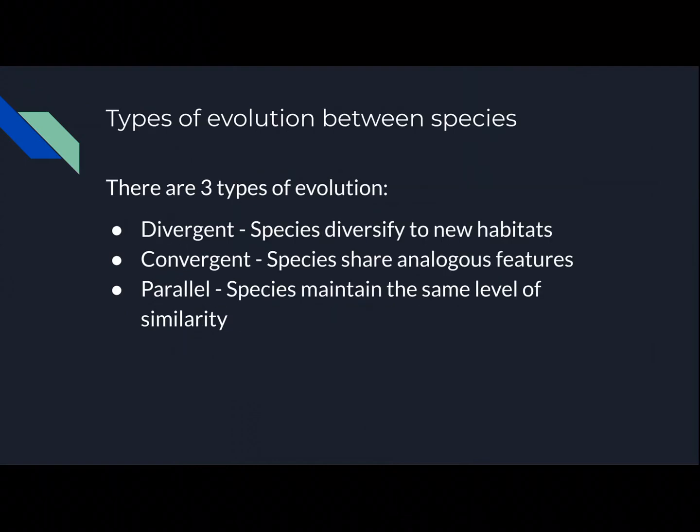The types of evolution between species. There are three types of evolution. Divergent: in divergent evolution, species diversify to new habitats. This explains why members of a species can differ over time.